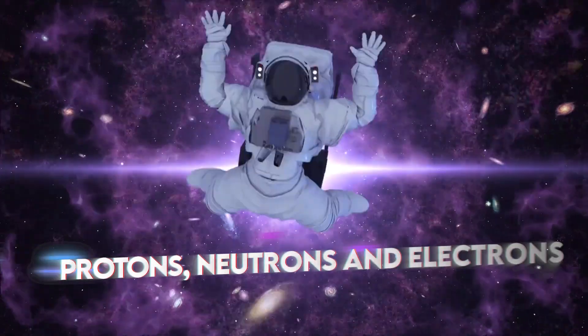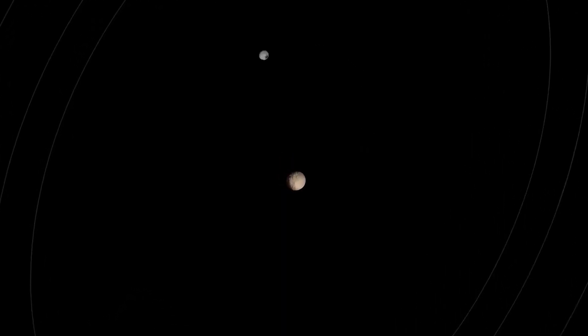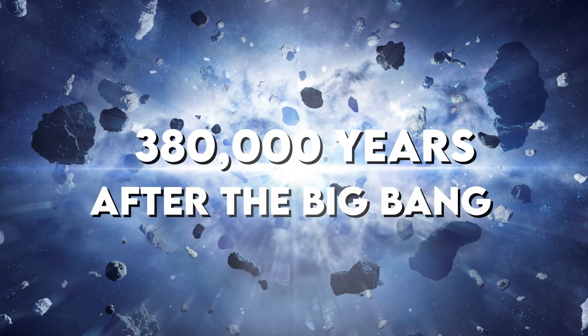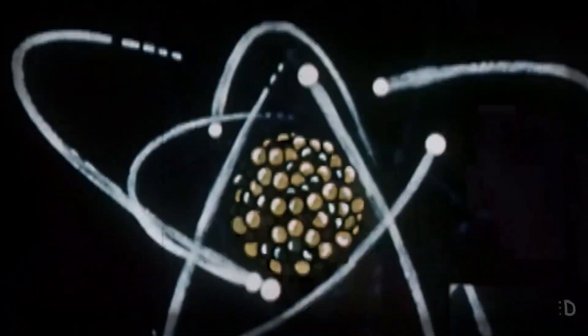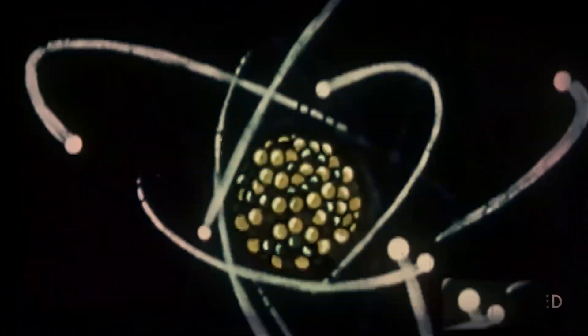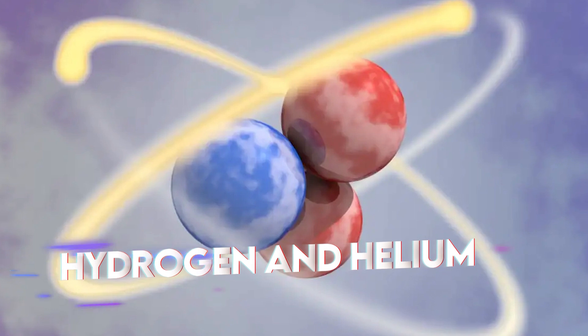As the universe cooled after the Big Bang, early particles like protons, neutrons, and electrons began to come together. Roughly 380,000 years after the Big Bang, the universe had cooled enough for electrons to combine with nuclei, giving birth to the first atoms, primarily hydrogen and helium.